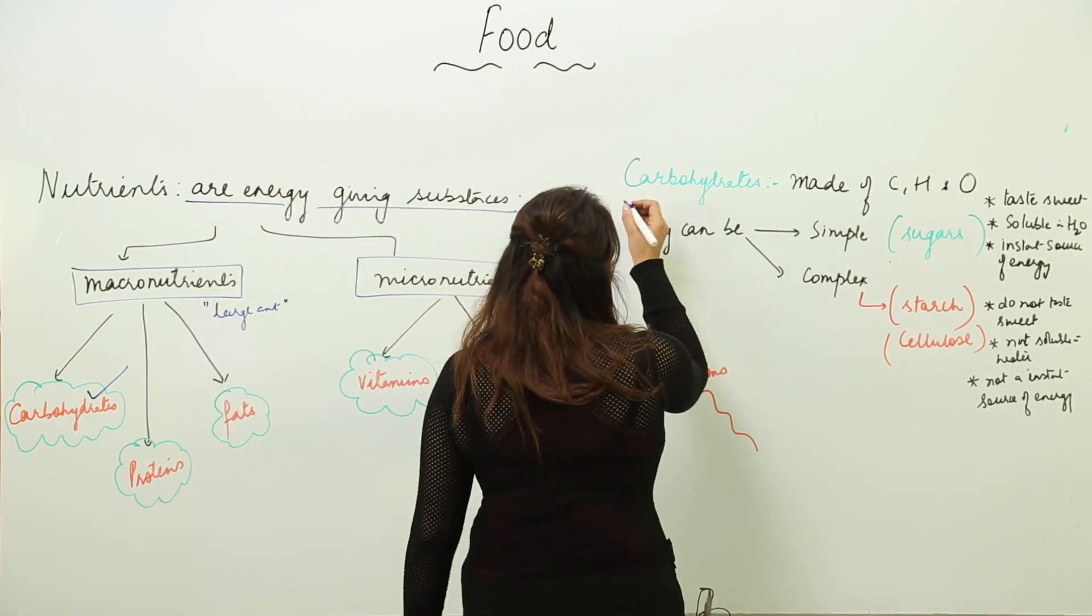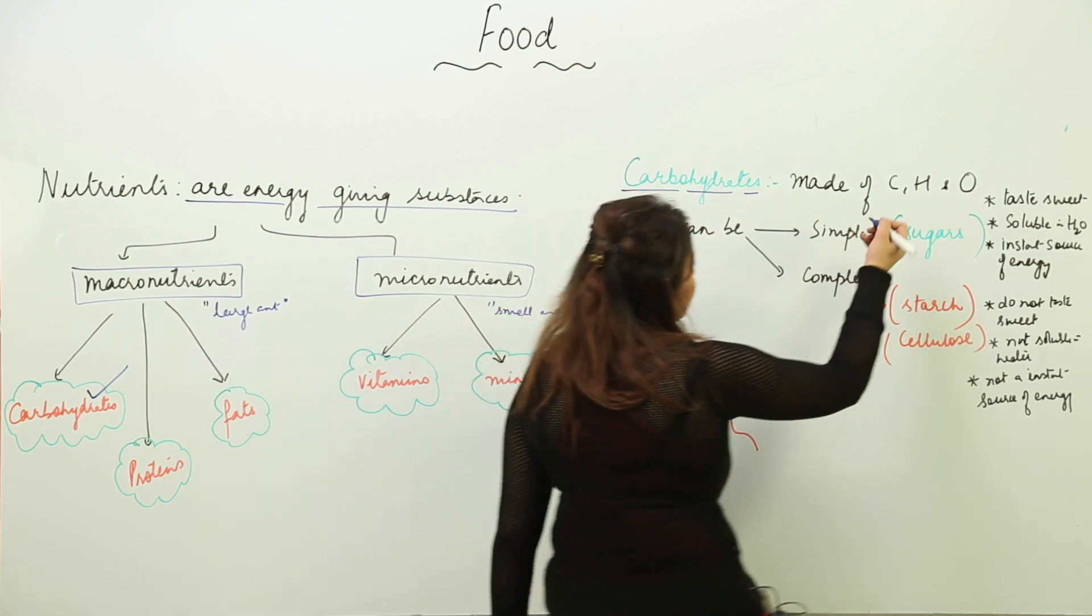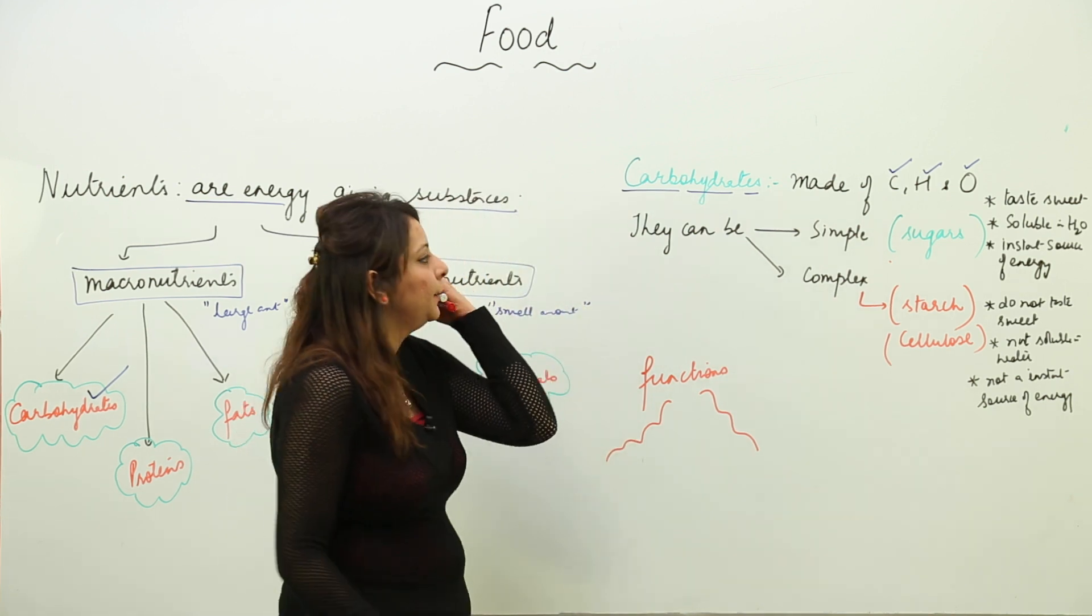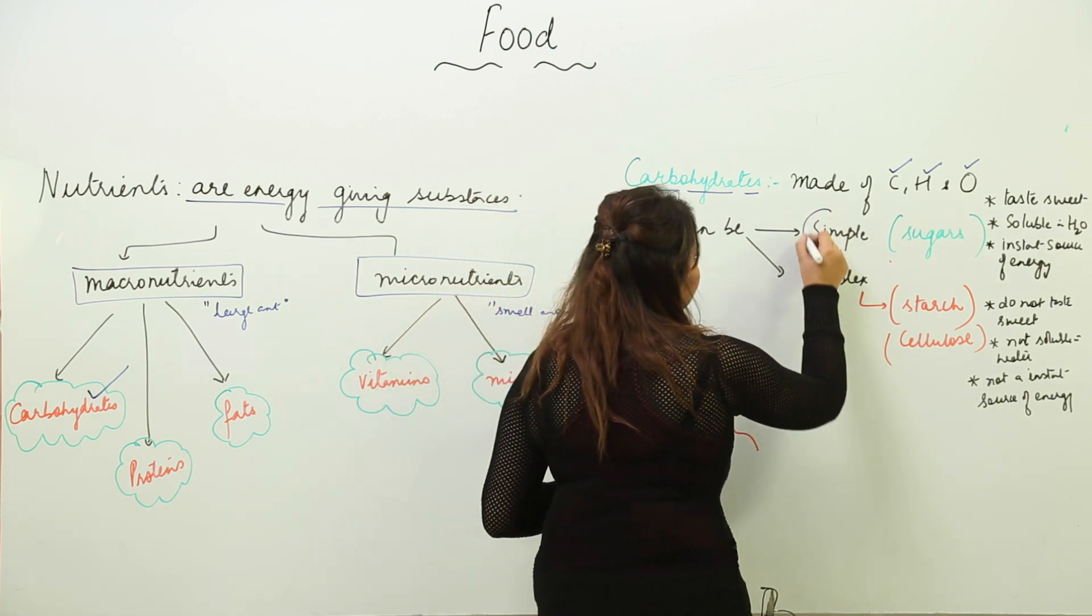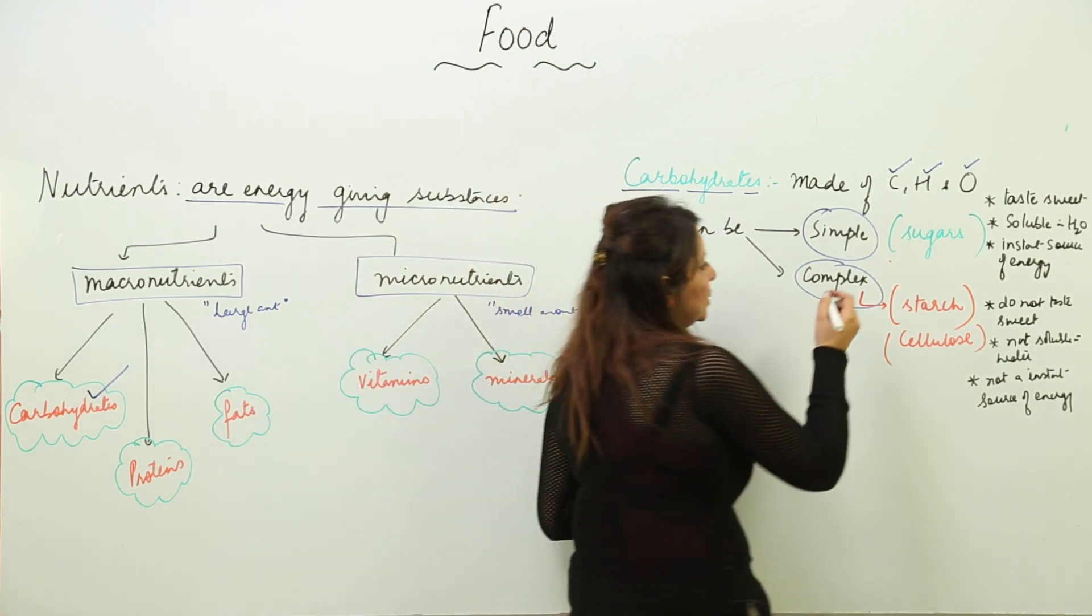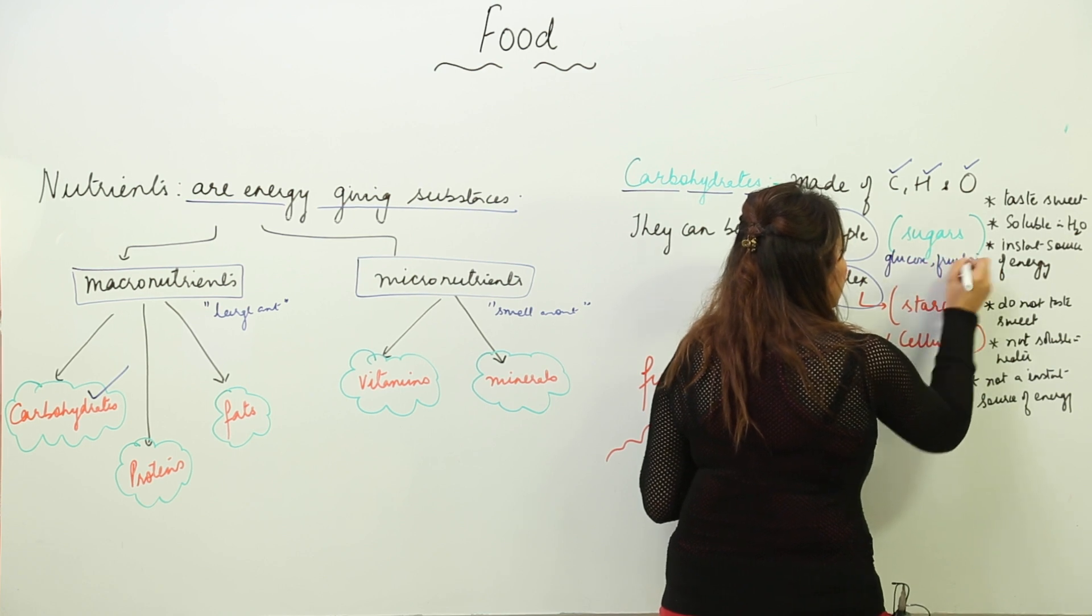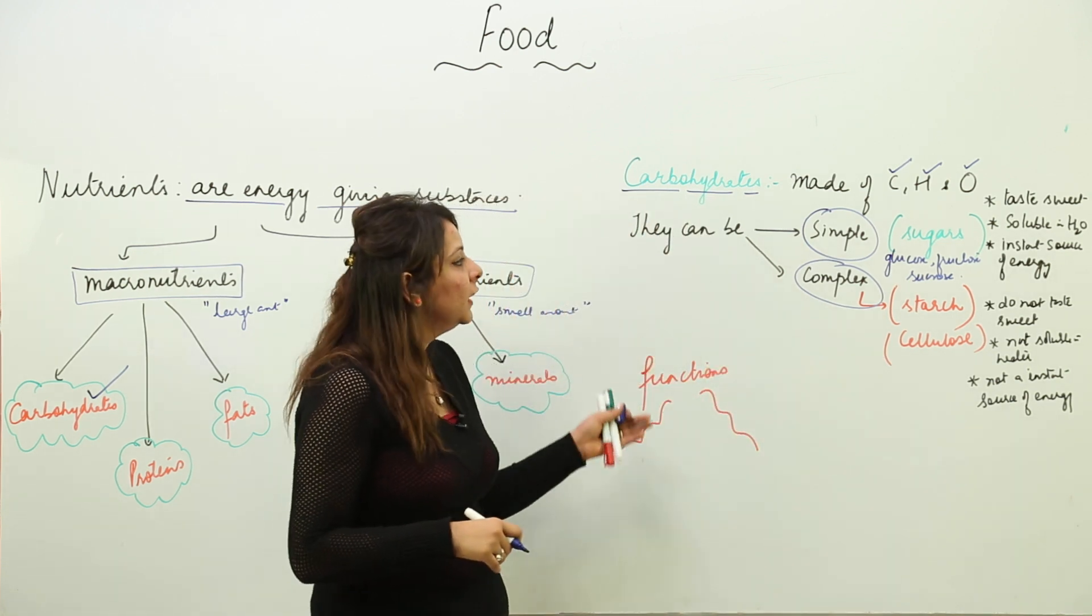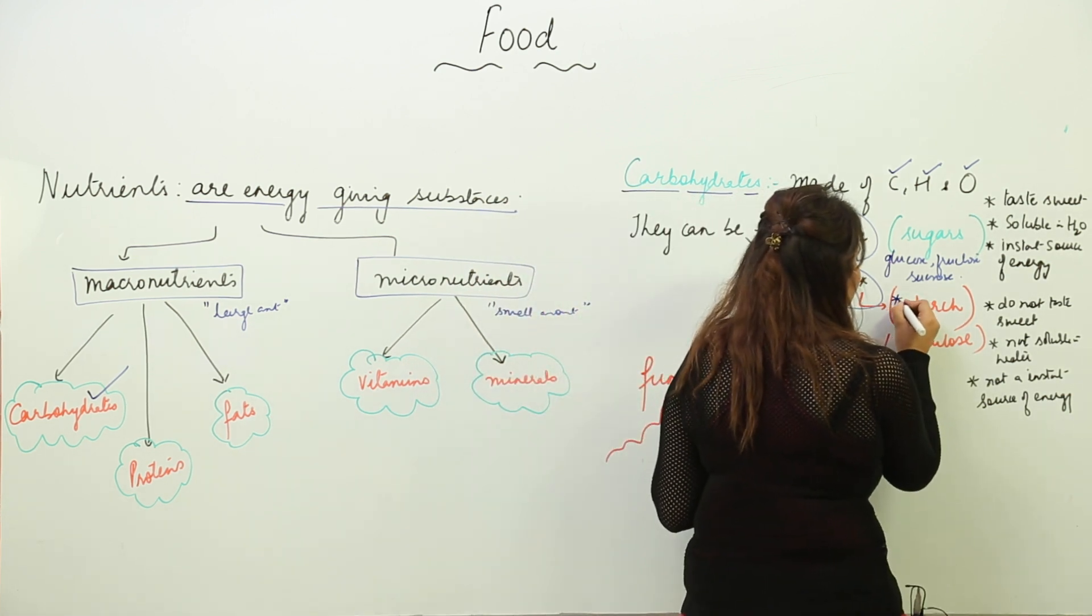Starting with the first detailed study of macronutrients - carbohydrates. As the name suggests, carbohydrates contain carbon, hydrogen, and oxygen. Carbohydrates are of two types: one is simple, other is complex. Simplest carbohydrates are the sugars like glucose, fructose, and sucrose. All these sugars are simple carbohydrates.